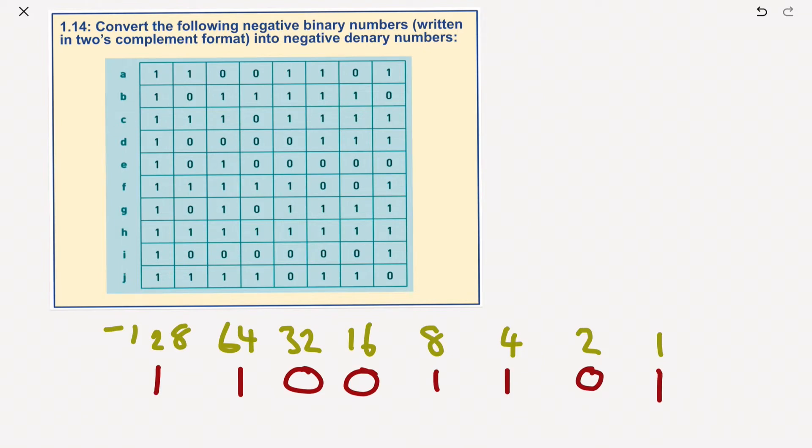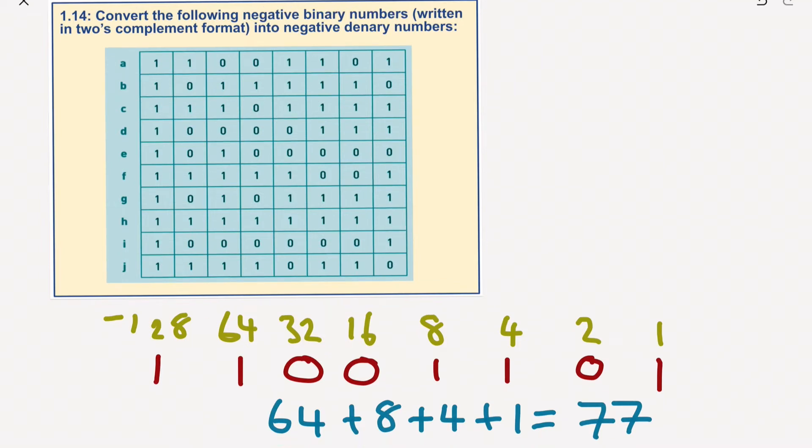We'll ignore the 128 for the moment, but we'll put down 64 plus 8 plus 4 plus 1 equals 77. So now if I go up at the top here and go minus 128 plus 77, obviously on a calculator this would be a lot easier.